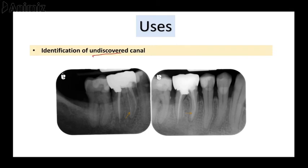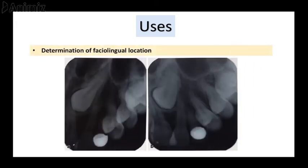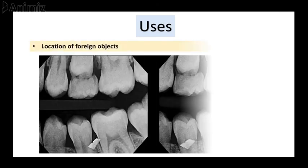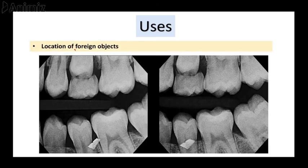In cases where four or five canals are present, it can be used in identification of undiscovered canals and determination of the faciolingual location. Especially in impacted canines, the SLOB technique can be used for localization of the impacted canine and determination of canal curvature. Finally, the most important use is in the location of foreign objects.